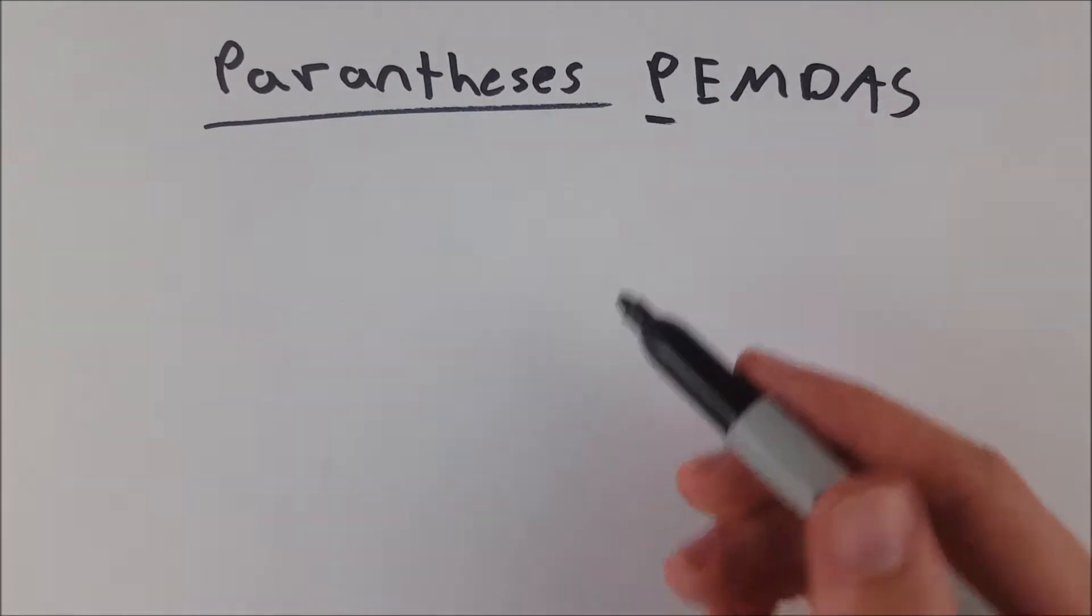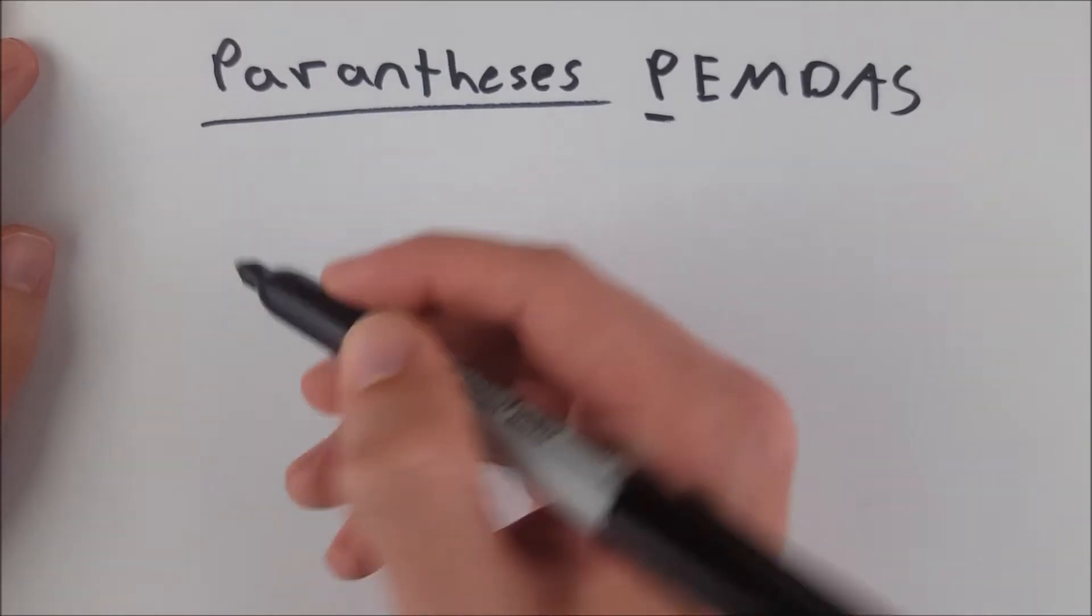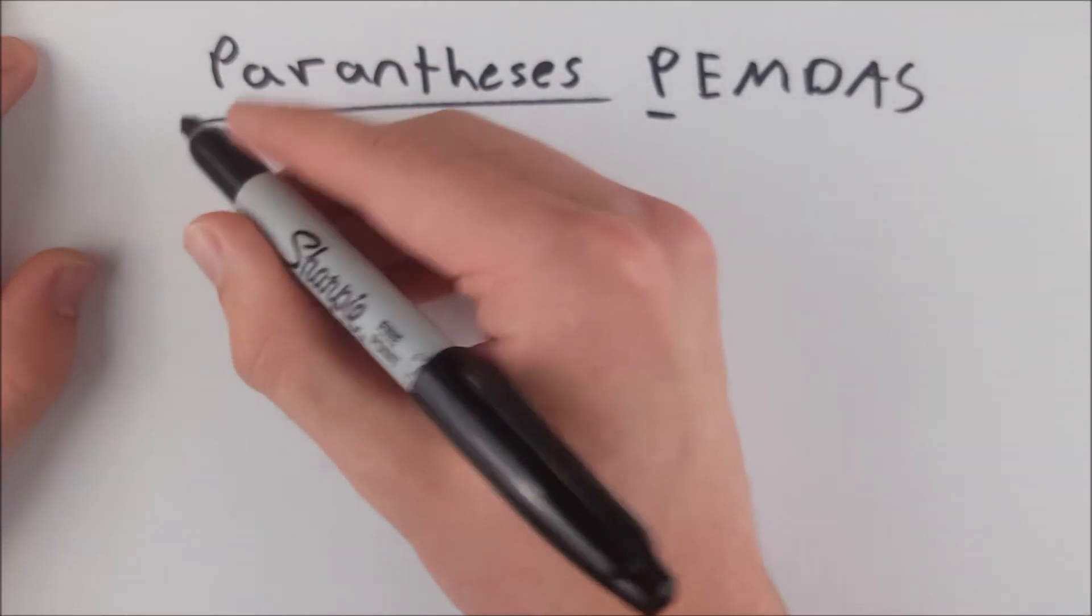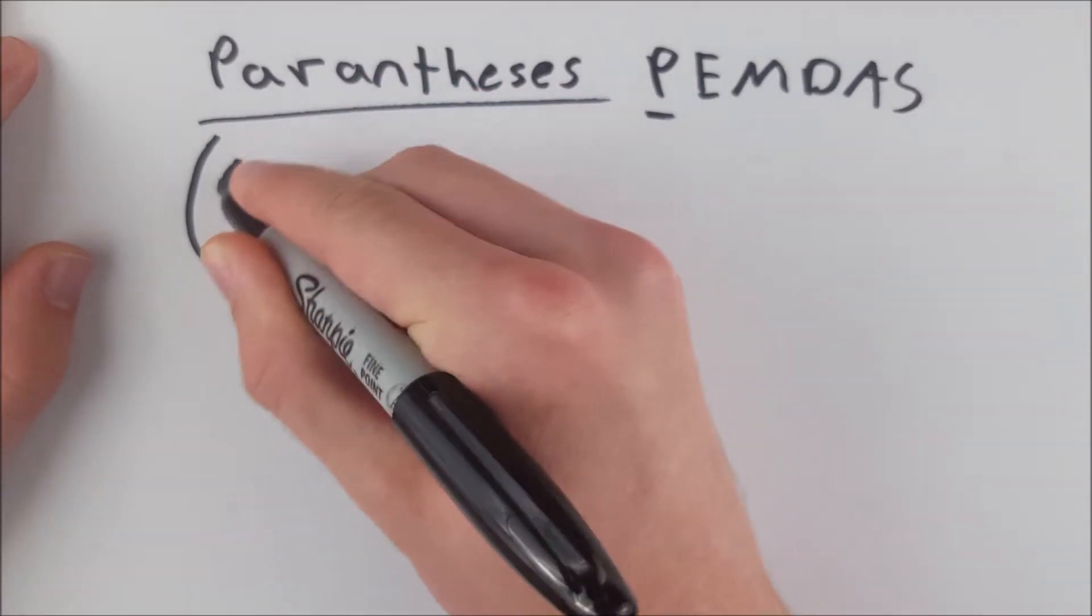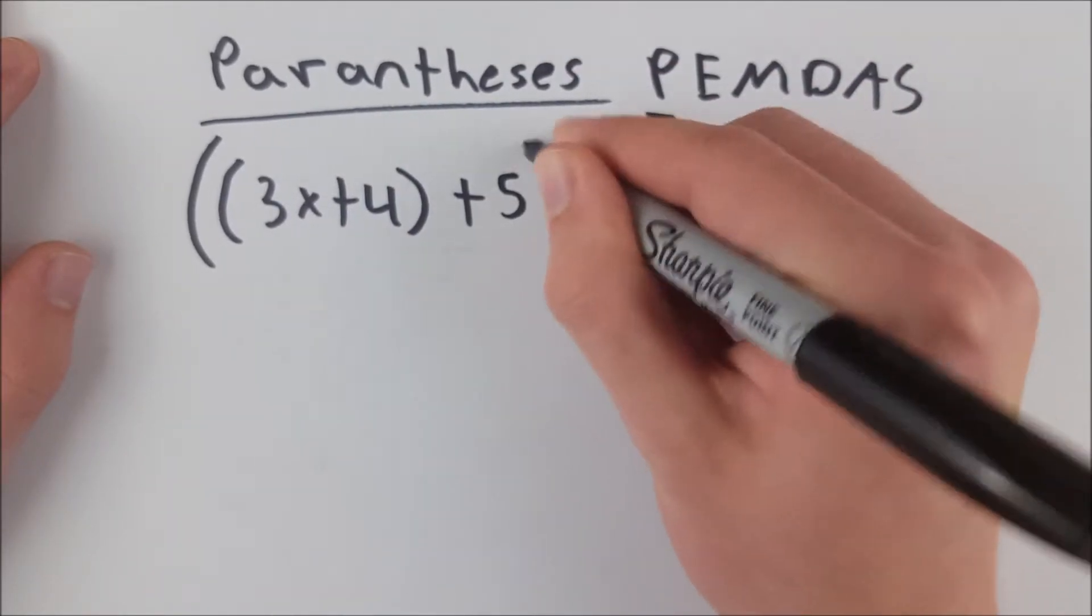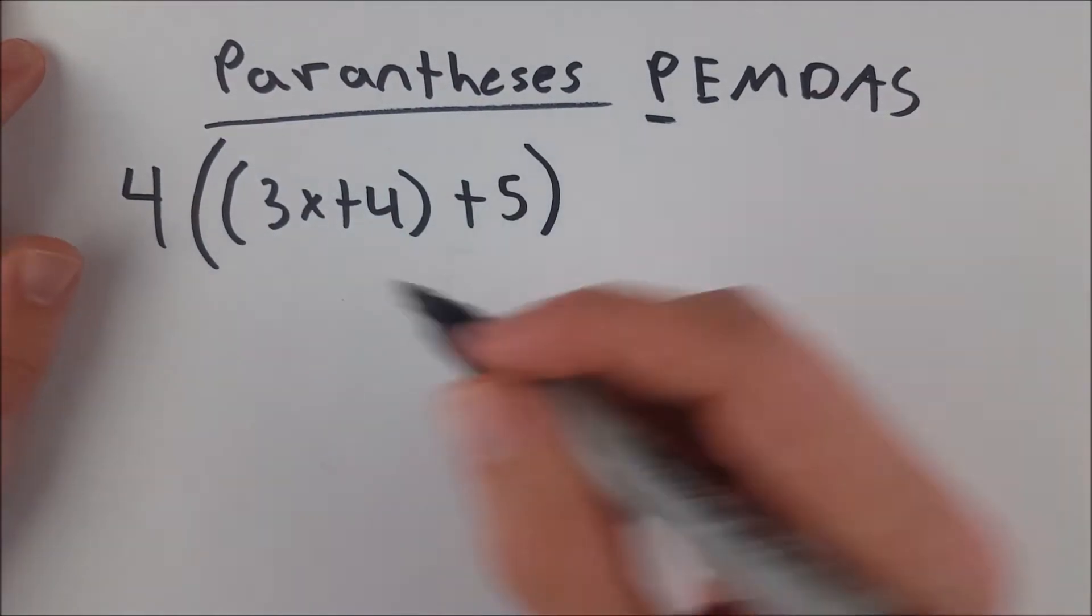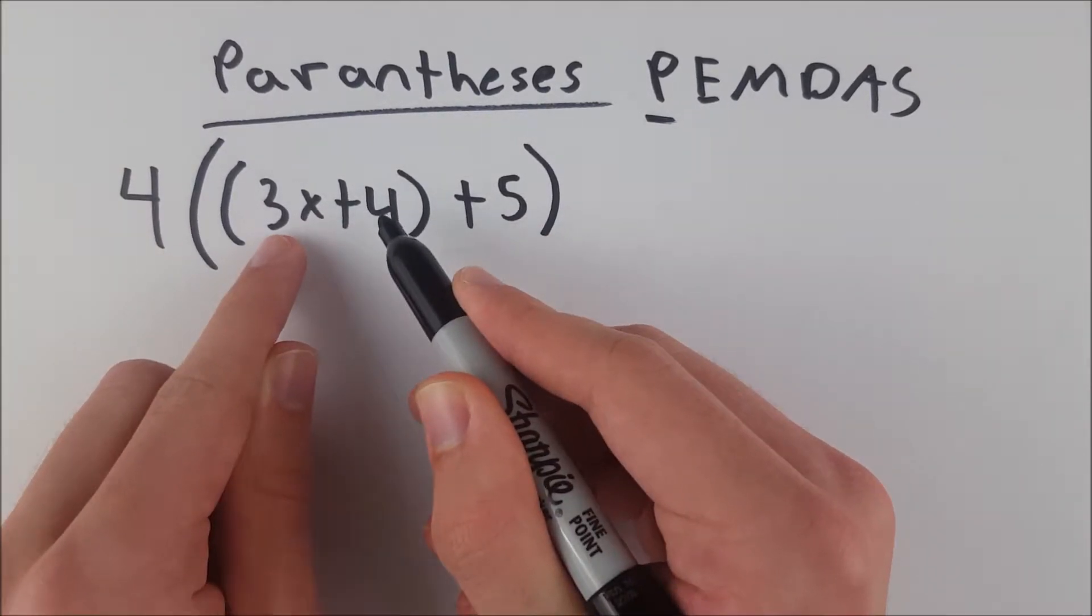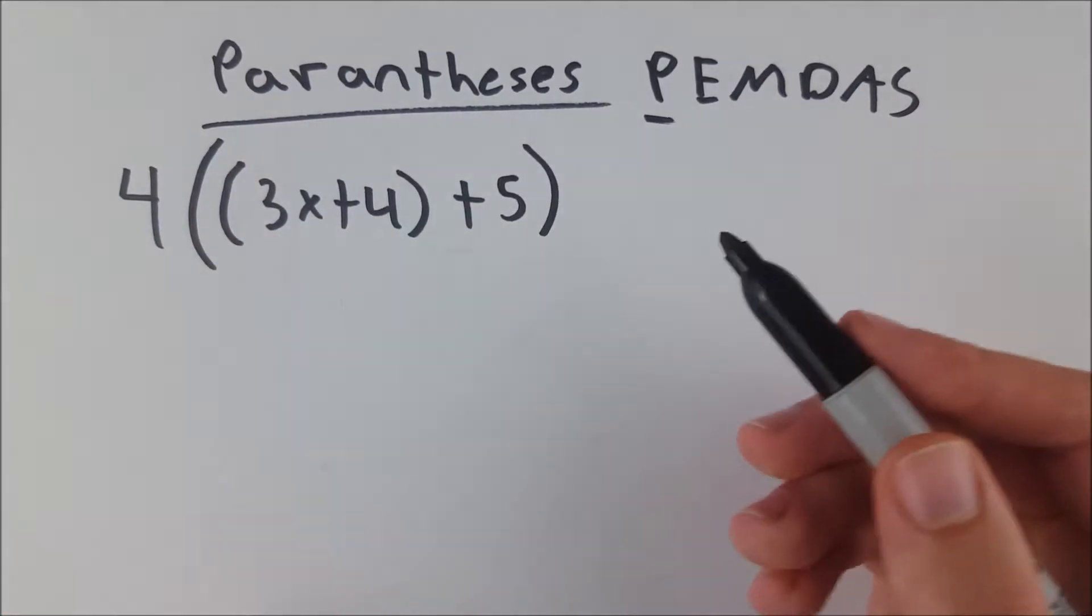And when you are working with multiple sets of parentheses, you go from the inside out. You can also use brackets as well as parentheses to make things easier to follow. So for example, let's say we had 4 times parentheses 3x plus 4 plus 5. If we were to do this out, or say we had an actual number to plug in for x, we would do this first, 3x plus 4, then add 5, moving from inside out. And then we would multiply it by 4.